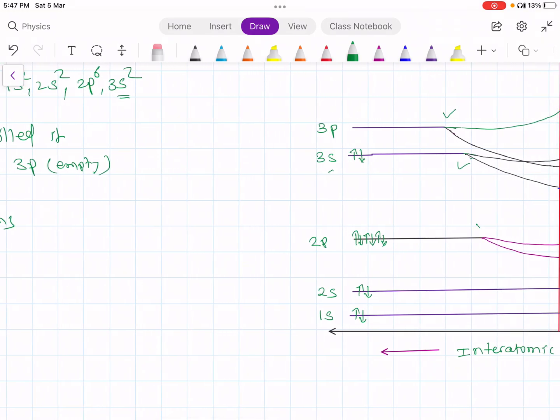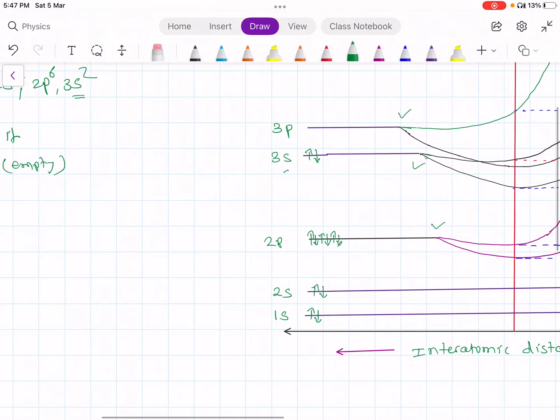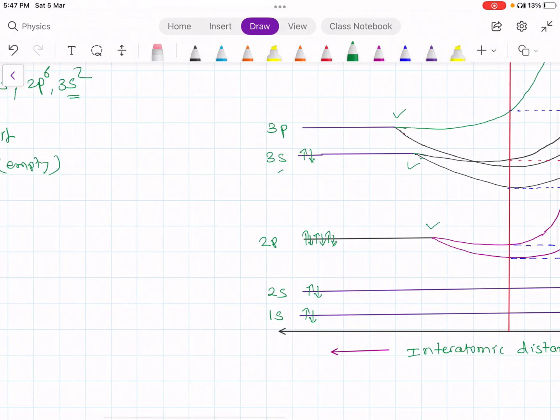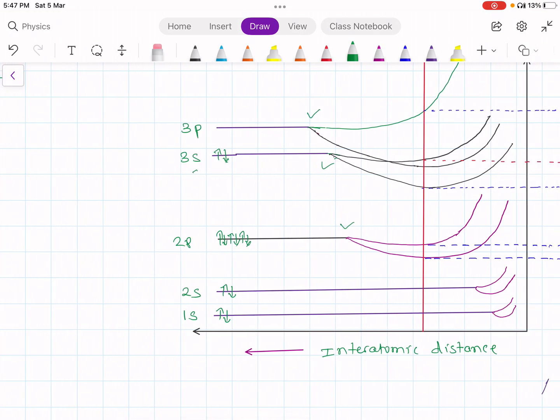But this inner energy levels, 1s and 2s, are shielded by 2p, 3s and 3p energy levels. These are the innermost energy levels. So they will split at the end.